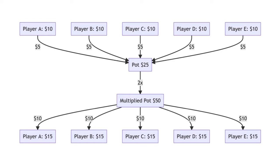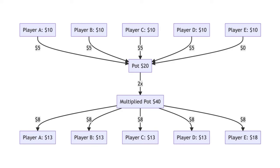In Nash Equilibrium in the Public Goods Game, nobody transfers anything to the pot. Any contributions are split between all players, so if there are more players than the multiple — which is normally the case by design — contributions result in a loss to that individual player. Consider the previous game: if player E contributes nothing, there is then $20 in the pot, which is doubled to $40. The pot is then split equally between the players, with each player receiving $8 from the pot. The result is that player E is better off having not contributed, ending with $18, compared to the $15 they would have received had they contributed $5 like the other players.